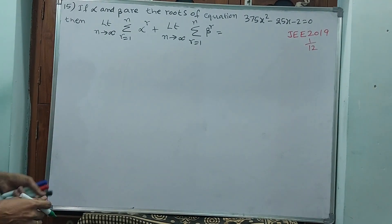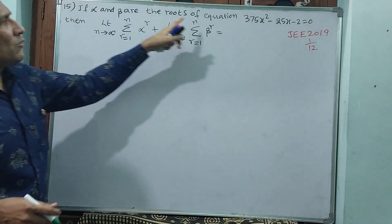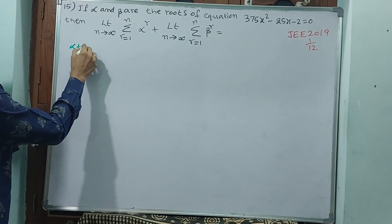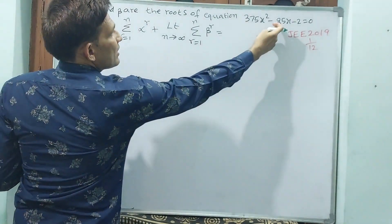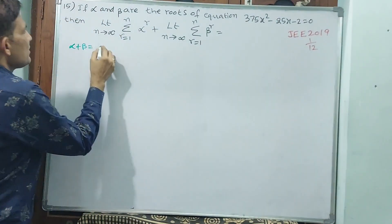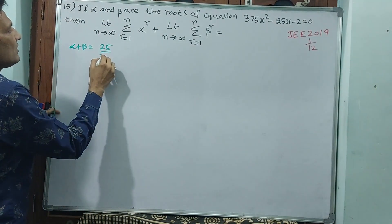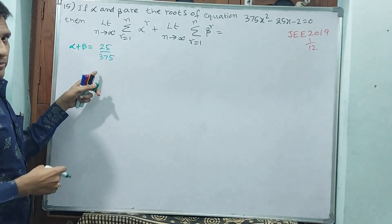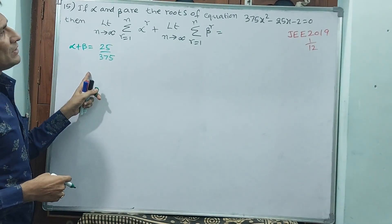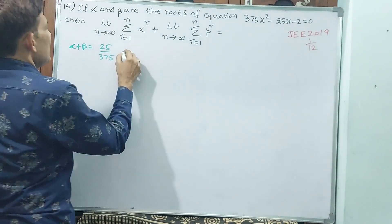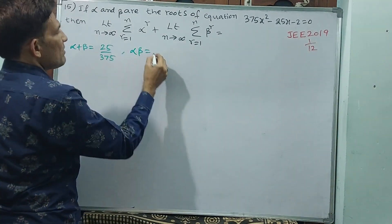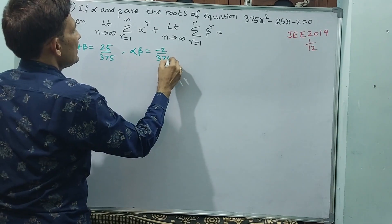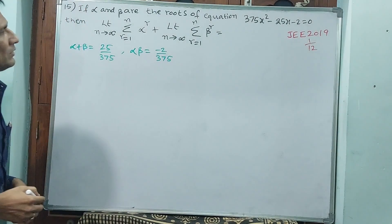Before that, since alpha and beta are the roots of this equation, I'll write: alpha plus beta is equal to minus b by a, which is 25 by 375 — don't reduce it yet, because keeping it this form will be convenient. And alpha into beta equals c by a, that means minus 2 by 375.